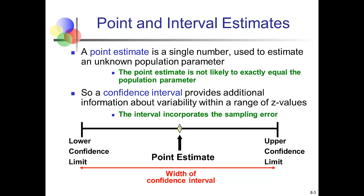The confidence interval is calculated using the point estimate and some measure of variation. That measure of variation allows us to find the lower bound by taking the point estimate and subtracting that variation to get the lower confidence limit. We use that same amount of spread, add it to the point estimate, and get the upper bound. The difference between the upper and lower bounds is the width of the confidence interval.